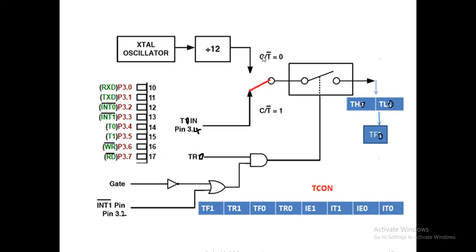For the timer operation, the registers get incremented with the help of the internal system clock. But in this program, we are performing the counter operation, so the control line is connected to the external input. The counter is going to count external events on pin P3.4. Since we are using timer 0, we use T0 as the input pin, where you connect a clock source or sensor. If you use timer 1, you connect the clock source to P3.5.